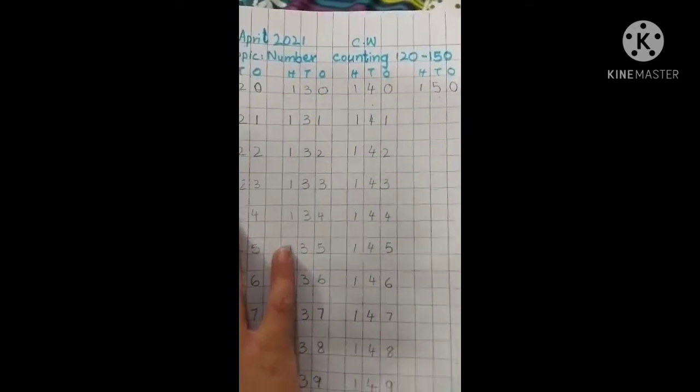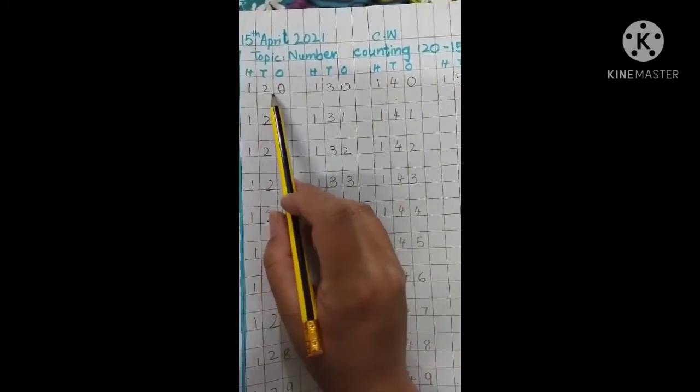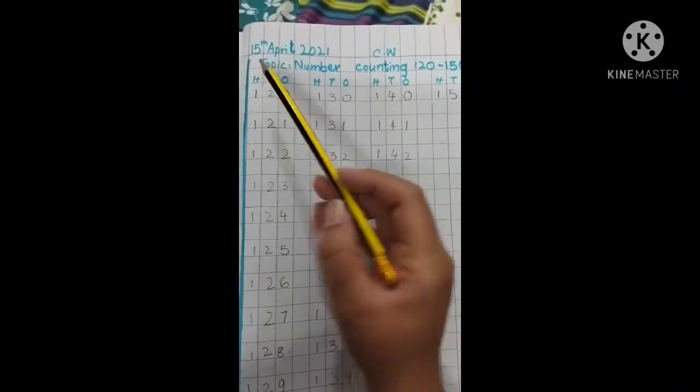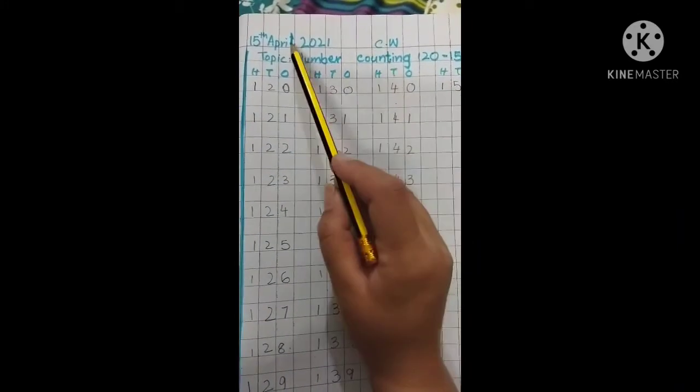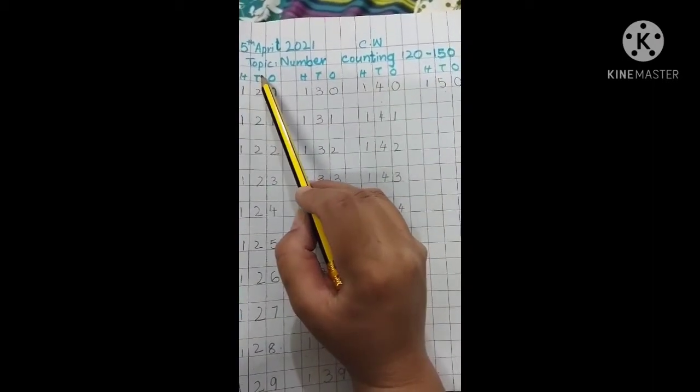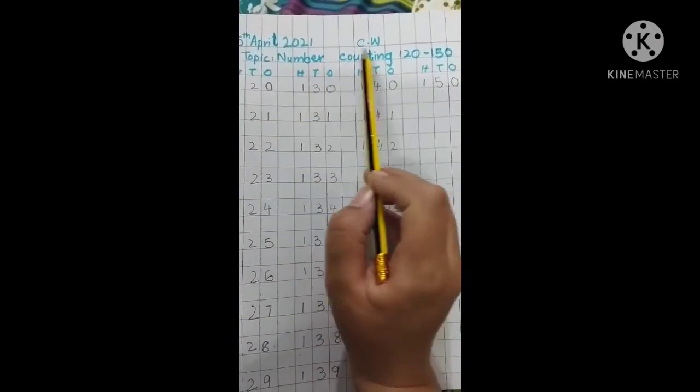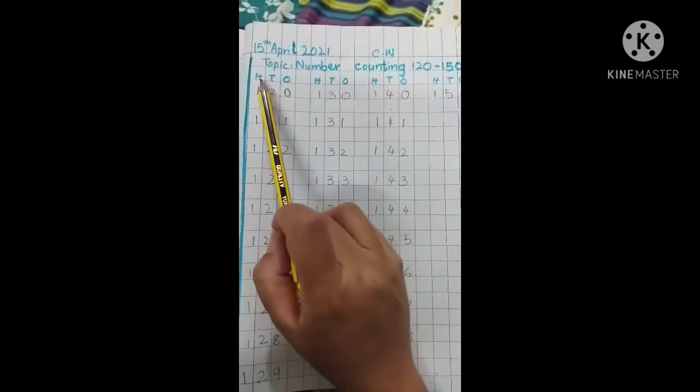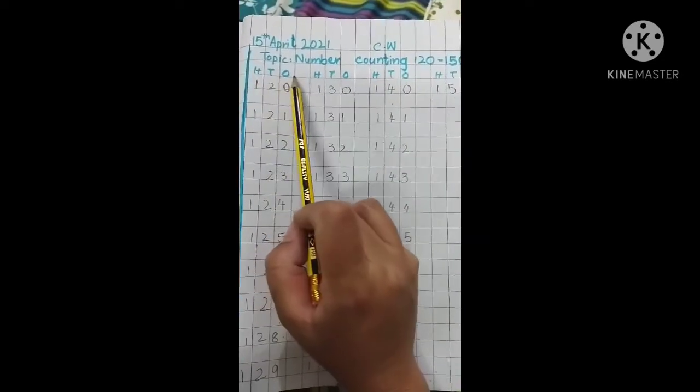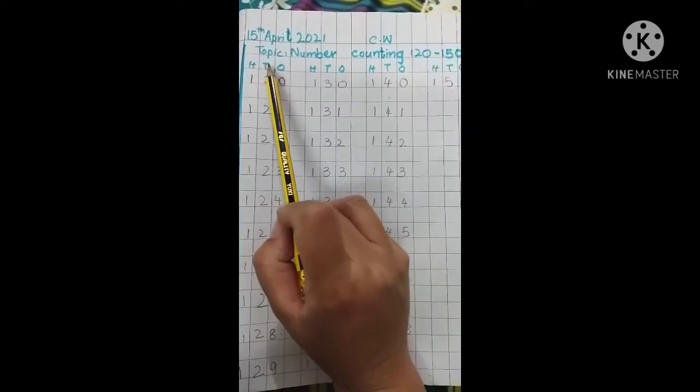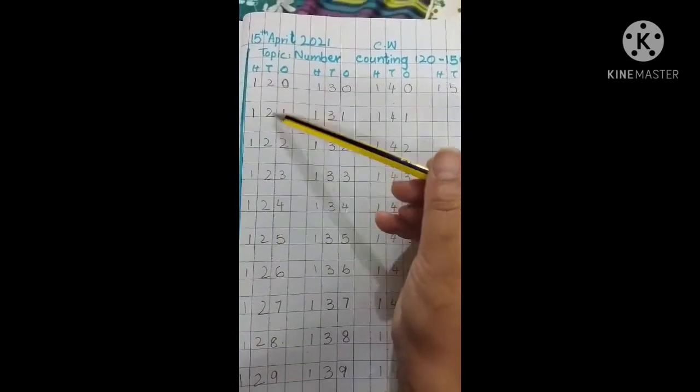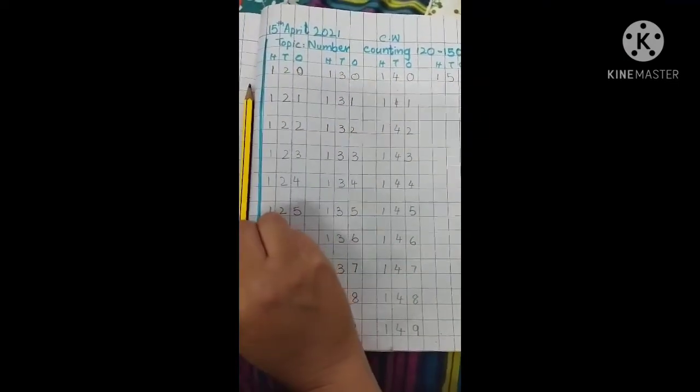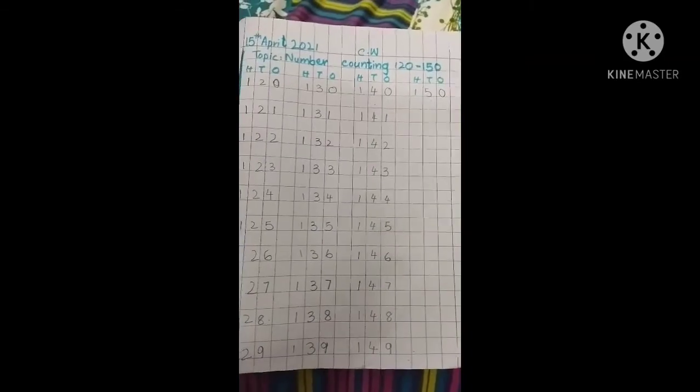Okay, now your counting is done from 120 till 150. First row margin line, then write down classwork and date. After this, your topic: number counting 120 dash 150. Then write with different color: H, T, O - 100, tens, or ones. And then after that you will do this counting with your pencil. Sharpen your pencil and do your work. Have a nice day, take care.